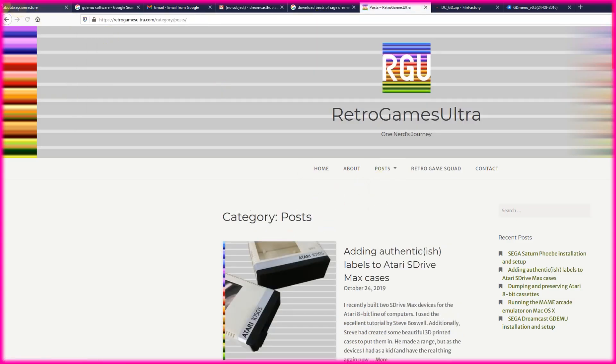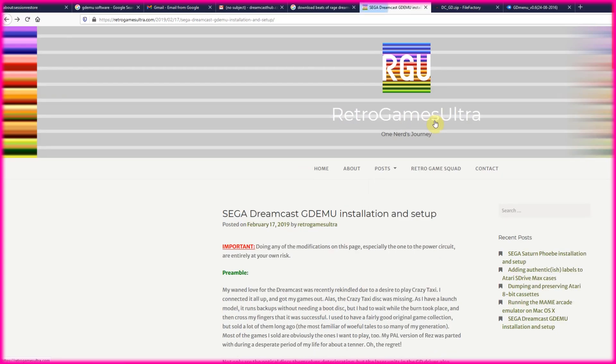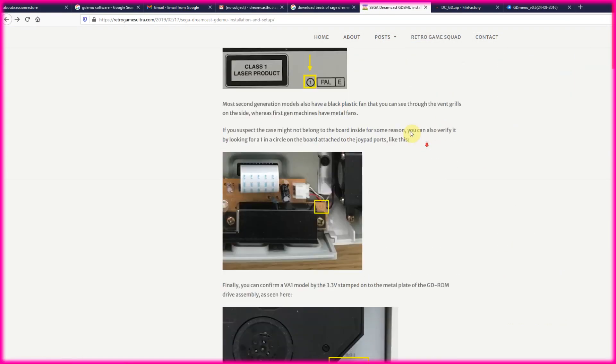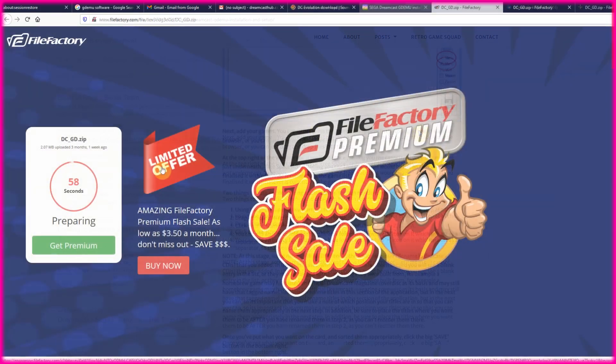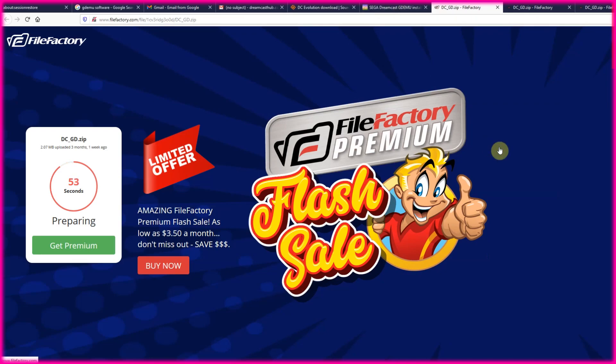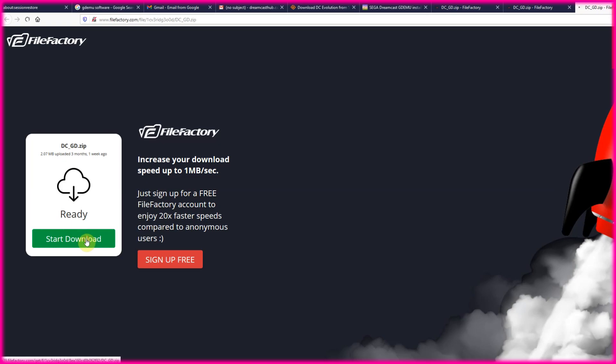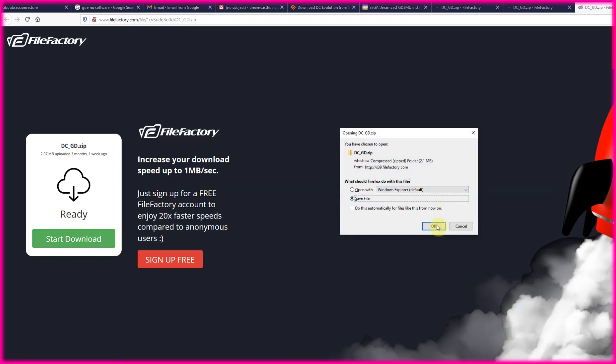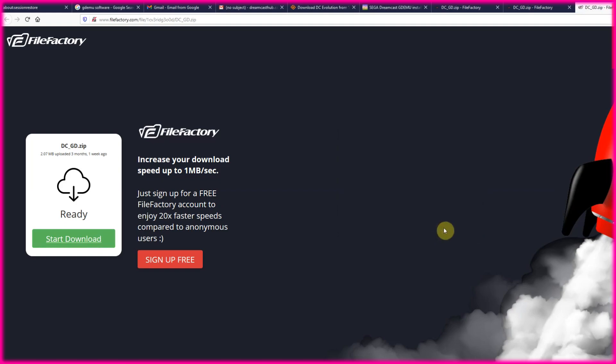So that takes care of the hardware. Now it's time to get the software. Retro Games Ultra actually has the gddc.zip. That's basically the file that has all of the software on it that you install onto the SD card.